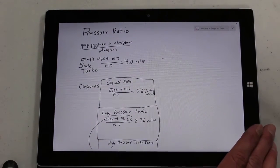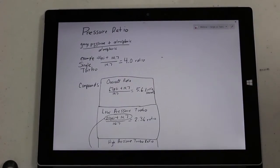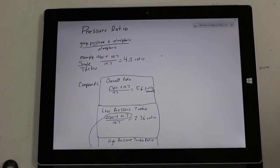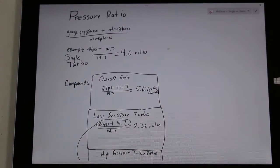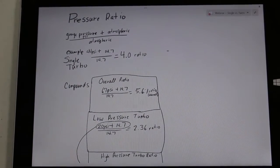Pressure ratio is atmospheric pressure divided by a certain number. In this case, using this equation, we've multiplied atmospheric pressure by four times.